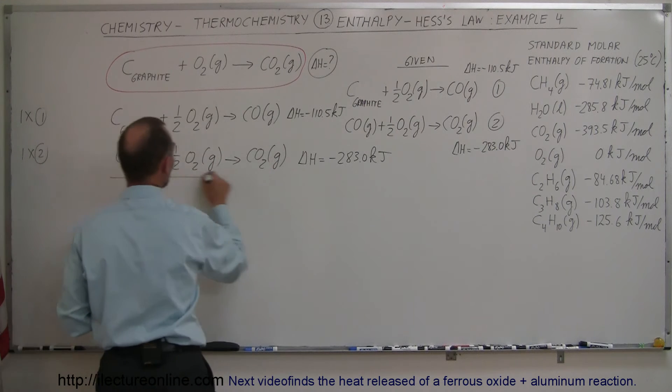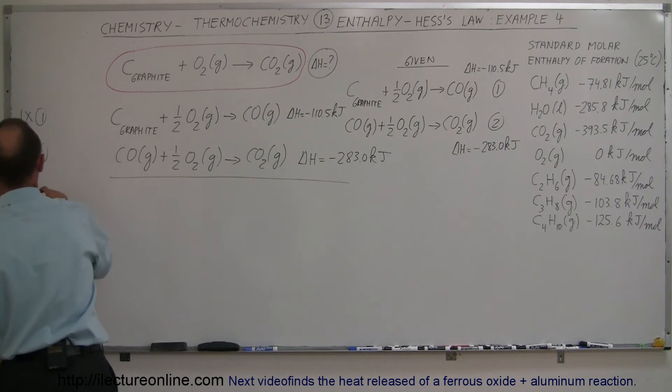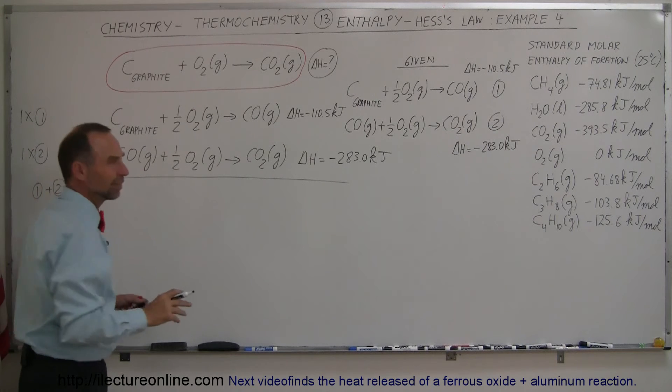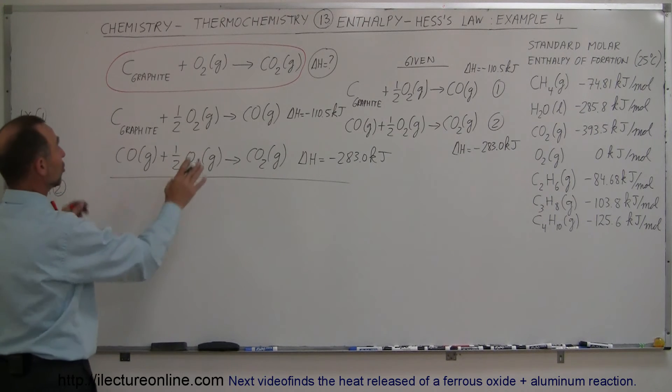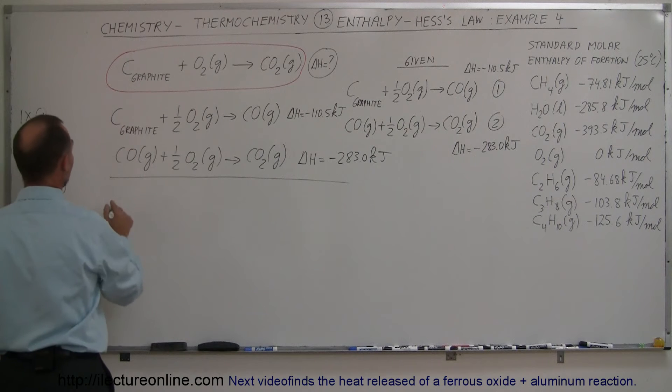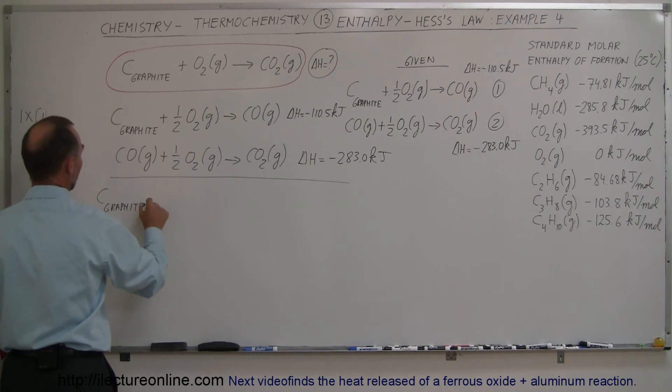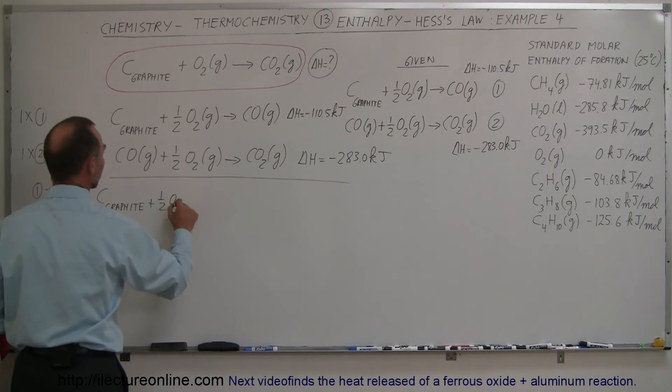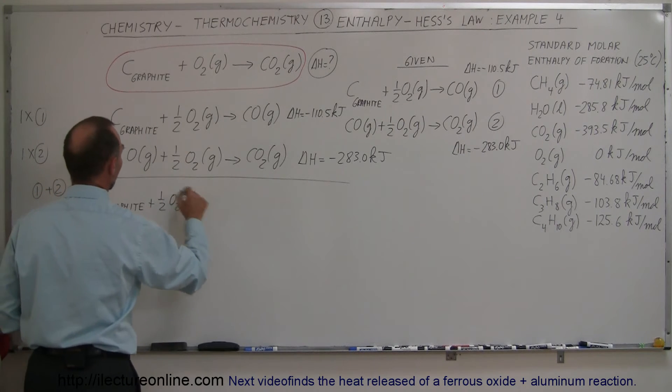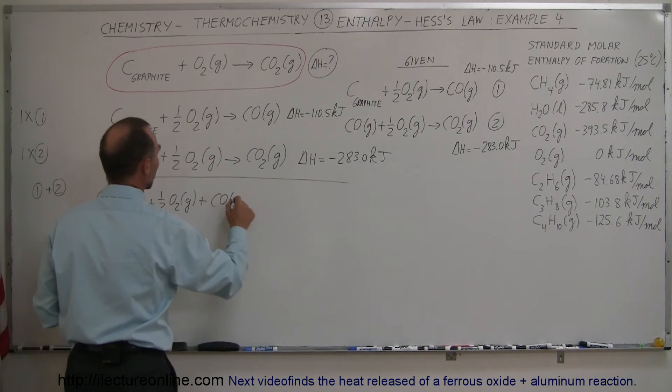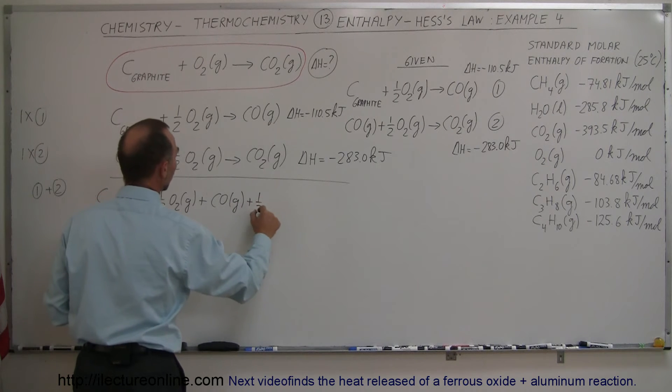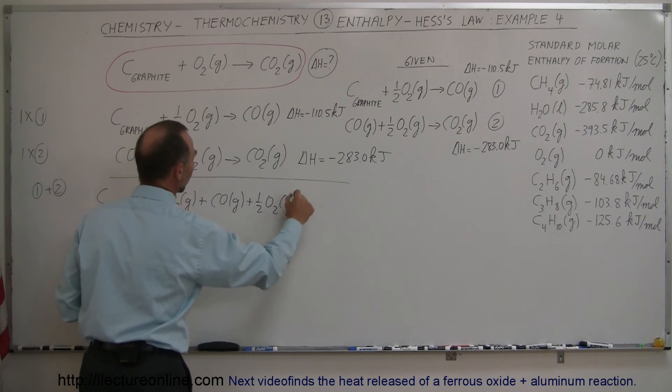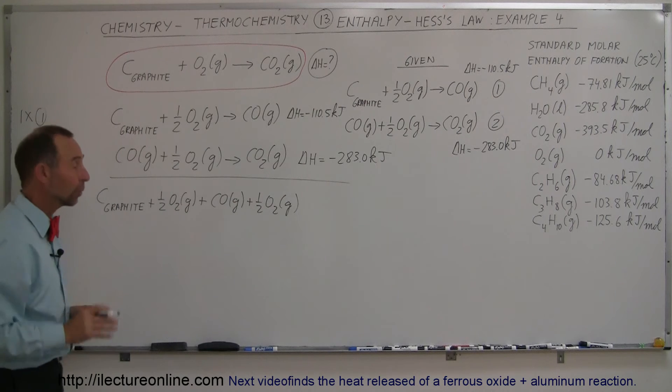Now all I have to do is add these two equations together. This becomes equation number one plus equation number two. I can use one and two because they haven't changed. If I do that, on the left side I end up with carbon in graphite form plus half a mole of oxygen gas, plus one mole of carbon monoxide gas, plus another half mole of oxygen gas. Those are all the reactants now of the combined equation.